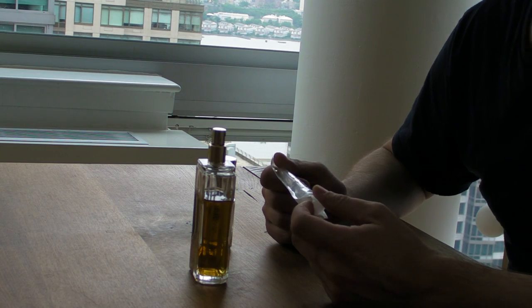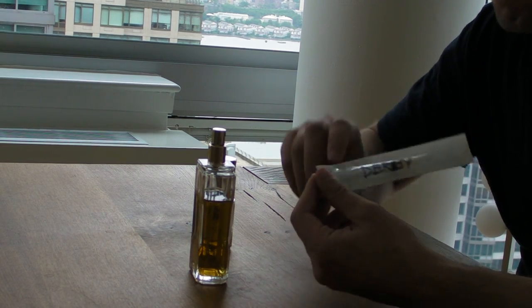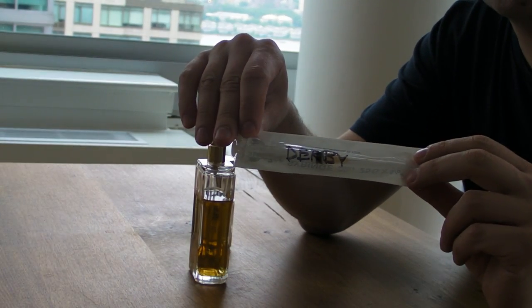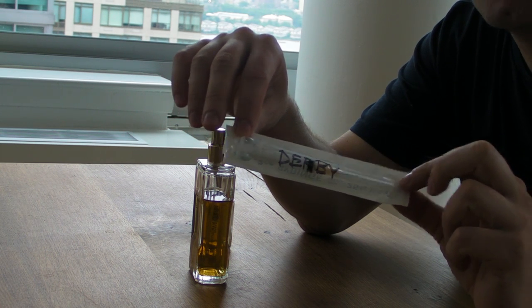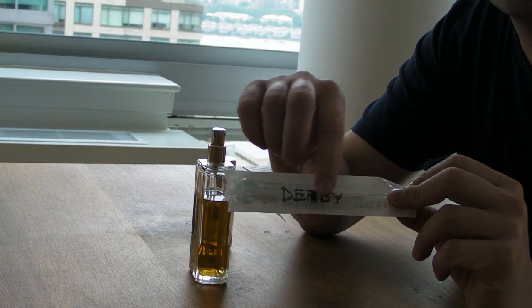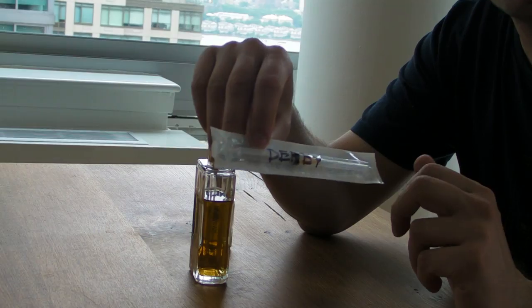I'm going to show you how to do a non-atomized split. This is a 3cc syringe. I write the name of the fragrance on the outside so that I can reuse it.